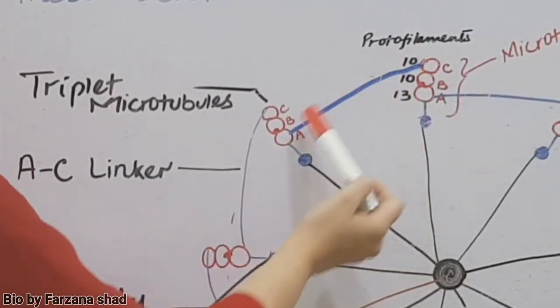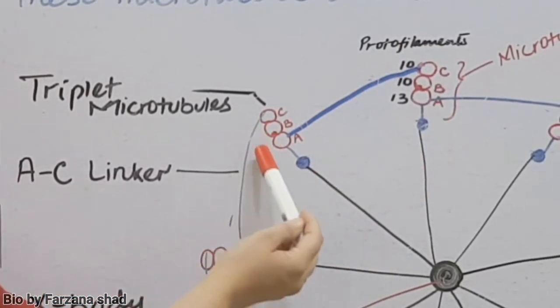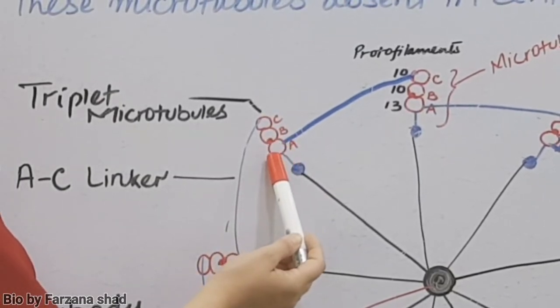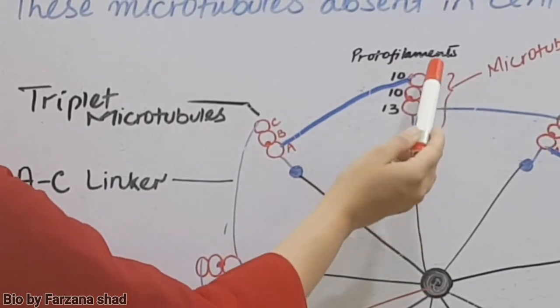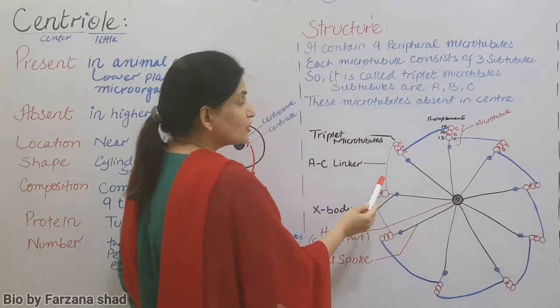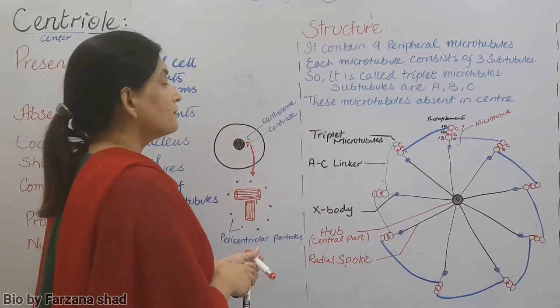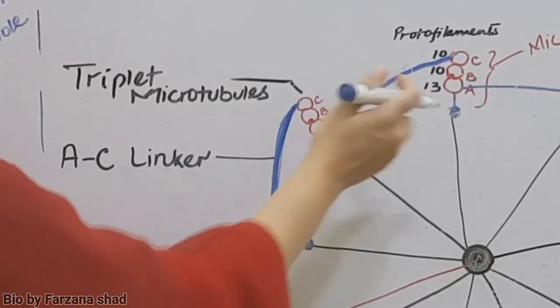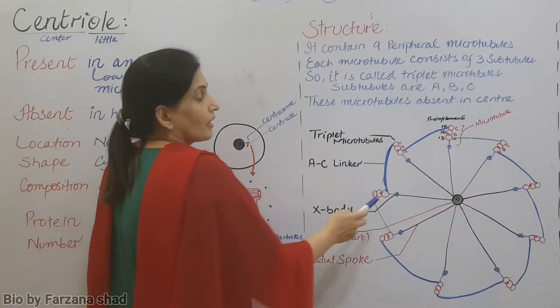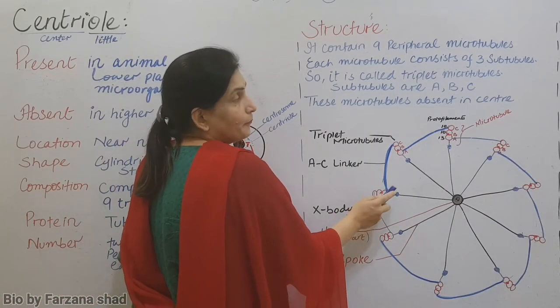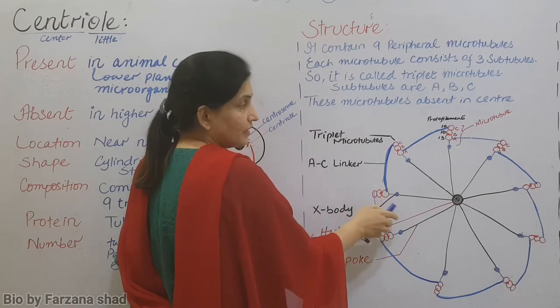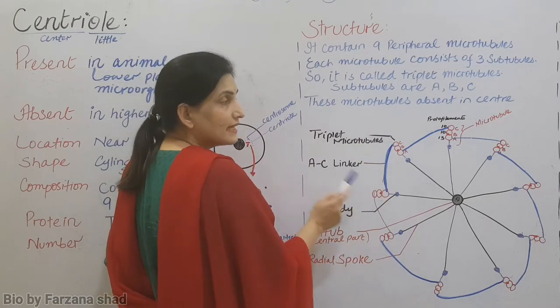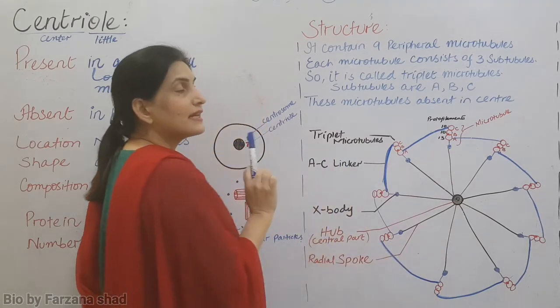B and C have ten protofilaments inside. These are linked with each other. They are connected to each other. Adjacent microtubules are connected to each other. Through what? Meaning the A subtubule of one microtubule connects with the C subtubule of the second microtubule. And the structure through which they connect, we use the term A-C linker. This construction you're seeing, this is the A-C linker. Again, A microtubule, the A subtubule of one microtubule connects with the C subtubule of the second microtubule. That is known as A-C linker. All the microtubules are connected with each other this way.